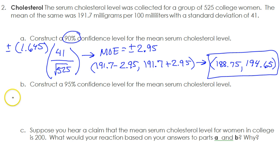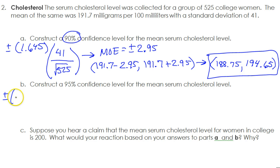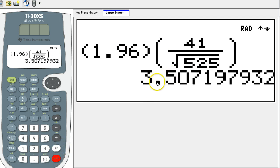Let's just use the formula. We're going to do plus or minus the z-score for 95%, which is 1.96. This part remains the same: 41 over the square root of 525. That's going to give us a new margin of error. So let's put that in the calculator. We get 3.51 — got to round up.